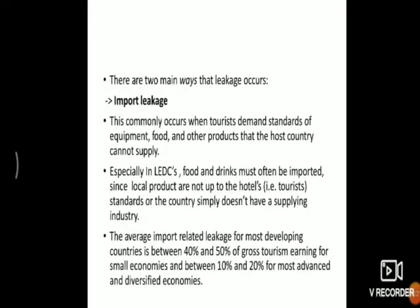There are two main types of leakage: import leakage and export leakage. Import leakage occurs when tourists demand standards of equipment, food, and other products that the host country cannot supply — especially in LEDCs, where food and drinks must often be imported since local products are not up to the required standard, or the country simply does not have a supplying industry.